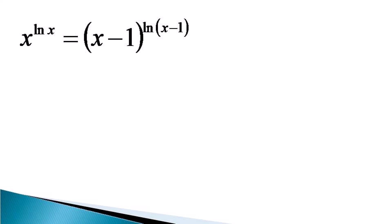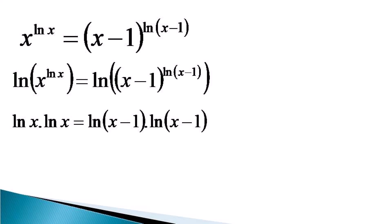To solve this equation, like most exponential equations, we start by taking the natural log of both sides. Then we use the power law of logarithms to get ln x times ln x equals ln(x-1) times ln(x-1), which becomes (ln x)² equals (ln(x-1))². This equation gives us two solutions: ln x equals plus or minus ln(x-1).